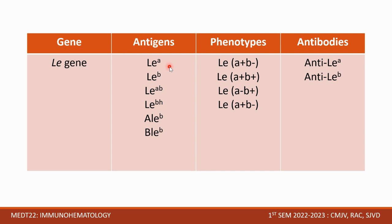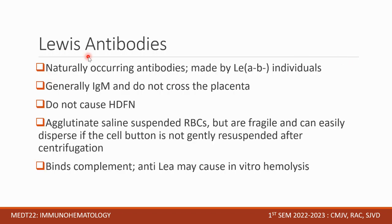The Lewis system antigens include LEA, LEB, LEAB, and LEBH, with different corresponding antibodies. Lewis antibodies are naturally occurring and are made by LE-null individuals. Generally they are IgM and do not cross the placenta, so they do not cause HDFN. They agglutinate saline-suspended RBCs but are fragile and can easily disperse if the cell button is not gently resuspended after centrifugation. They also bind complement, so anti-LEA may cause in vitro hemolysis.